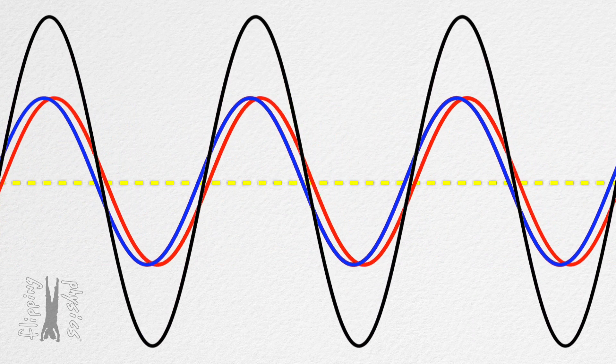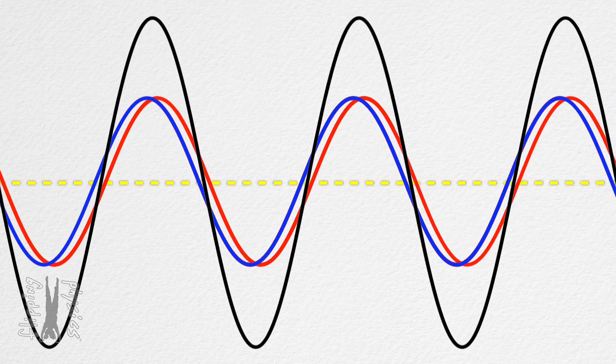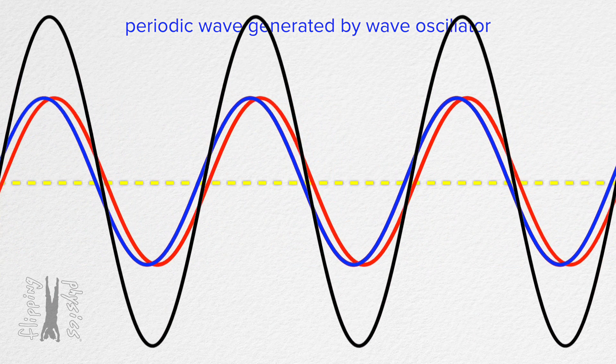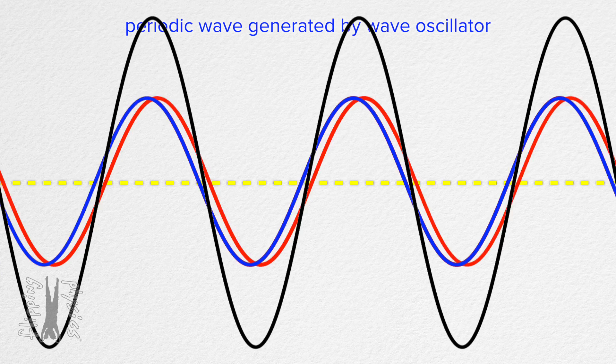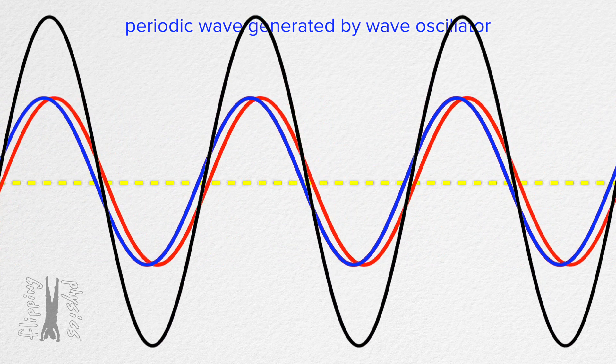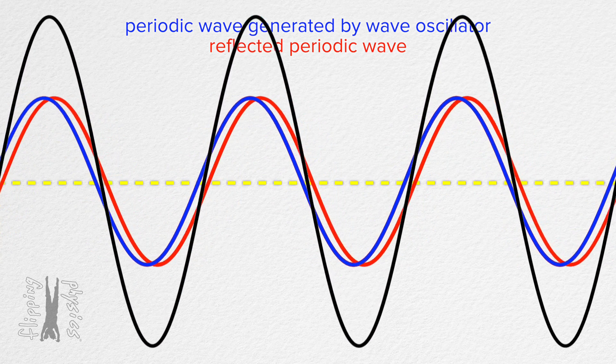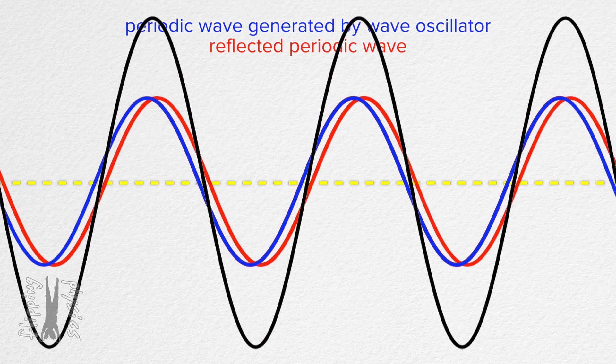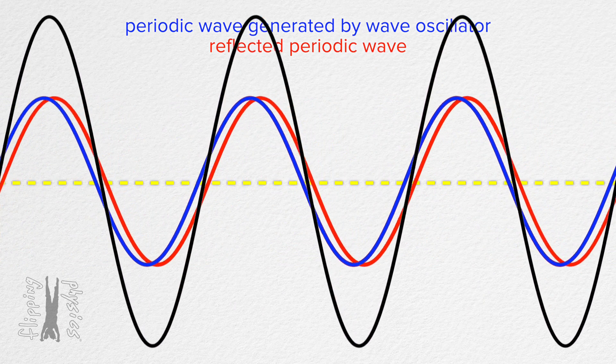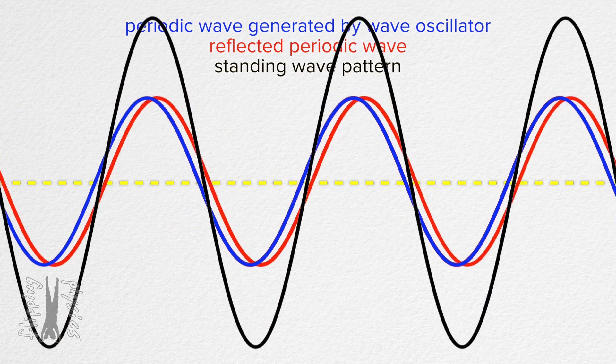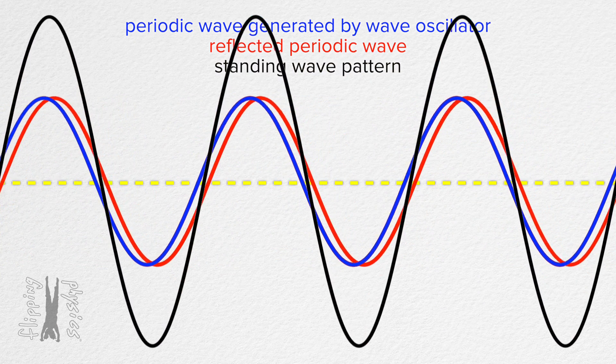The blue waves represent the periodic waves being created by the oscillator. And the red waves represent the waves which are reflected at the end of the spring and headed back toward the oscillator.